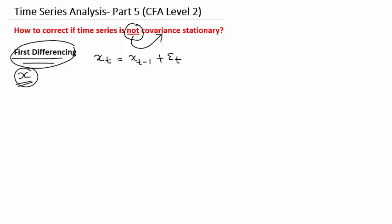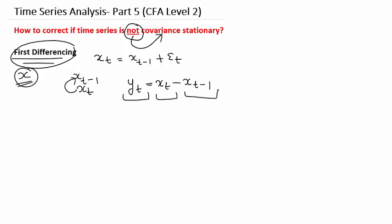To do this, we create a new time series by subtracting the value of x in the immediately preceding period from the current value of x. If the current value is x_t, then the immediately preceding value is x_{t-1}. We call this new time series y_t, so y_t equals x_t minus x_{t-1}. Since we already know that x_t equals x_{t-1} plus the error term, substituting this into the equation leaves only the error term.